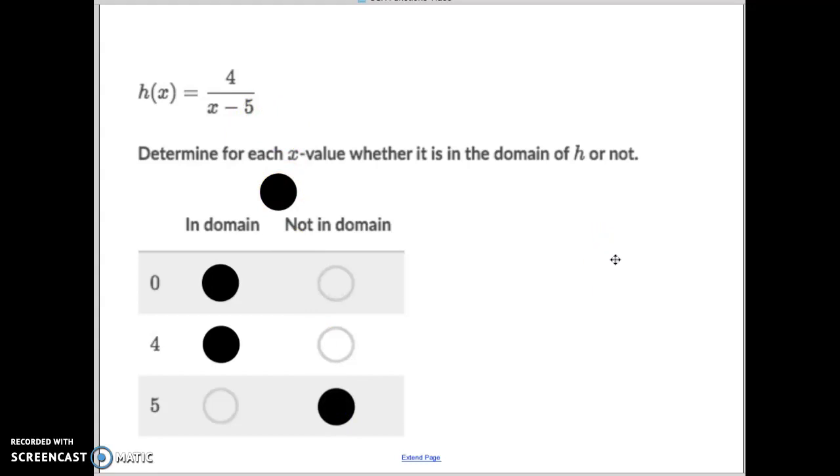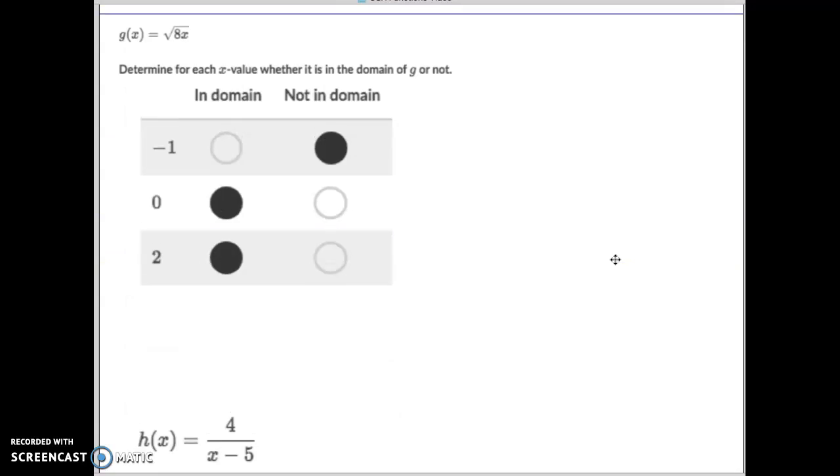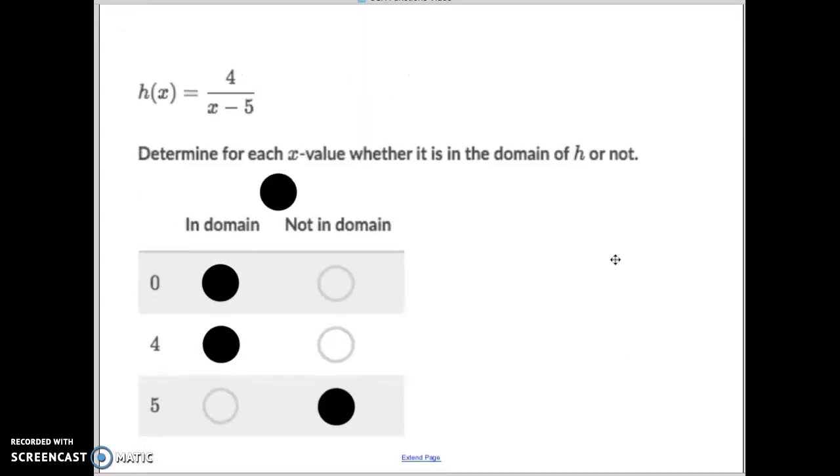So as you work through these, this one, doesn't matter what it is, they're all in the domain. This type here, you can't have a negative in the square root. So anything that would create a negative square root is not going to work. And then this type right here, you can't have 0 in the denominator. So whatever number would cause that expression on the bottom to be a 0 does not work.